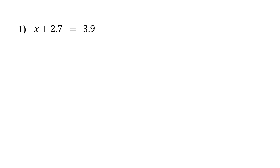Here, 2.7 is being added to x. So to get x by itself, we subtract 2.7 from both sides. Remember, whatever you do to one side, you must also do to the other to keep the equation balanced.